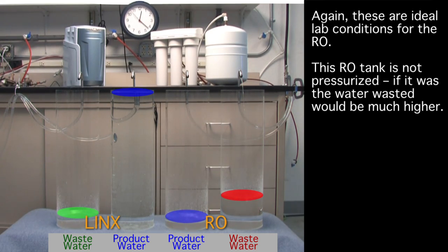This video shows an RO producing just eight-tenths of a gallon of drinking water while wasting 2.8 gallons. This means 76 percent of the water is wasted.